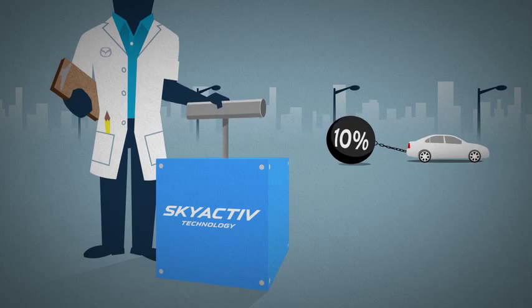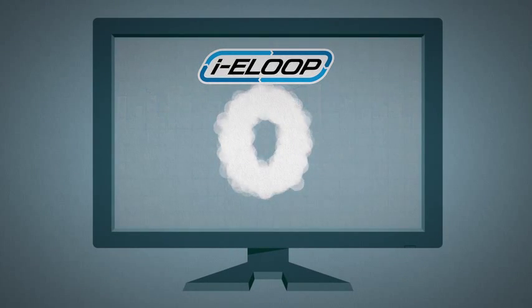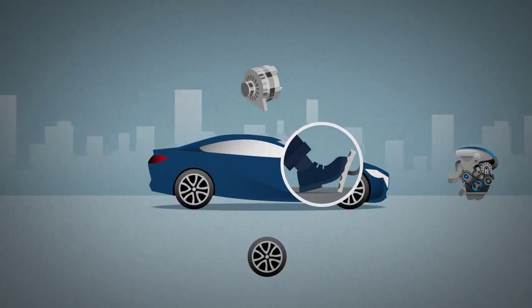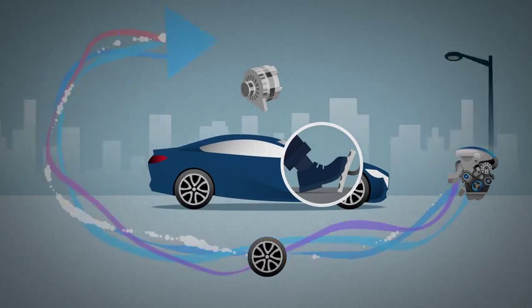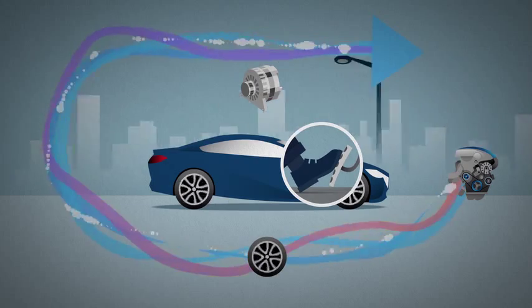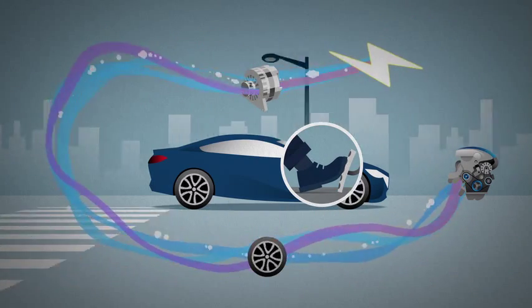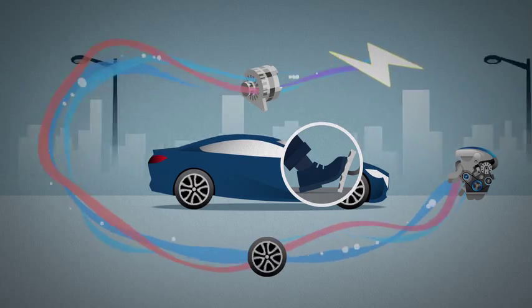But we invented a way to reduce that to zero. IE Loop, a regenerative braking system that recovers wasted energy. It uses a special alternator that freewheels when the engine moves the car. But the moment you let off the gas, it wakes up to turn outgoing energy into electricity. These huge surges of power need to be stored somewhere.